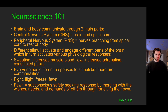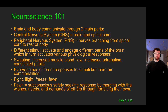Different types of stimuli activate and engage different parts of the brain, and that in turn activates various physiological responses. What do I mean by physiological responses? Sweating, increased muscle blood flow, increased adrenaline, constricted pupils, heart racing. These are things that signals from our brain directly impacts our physical responses.